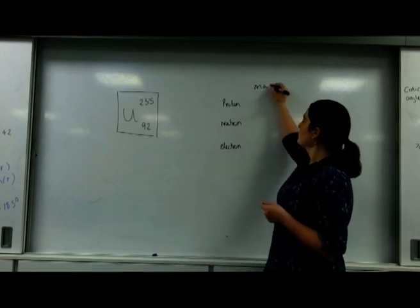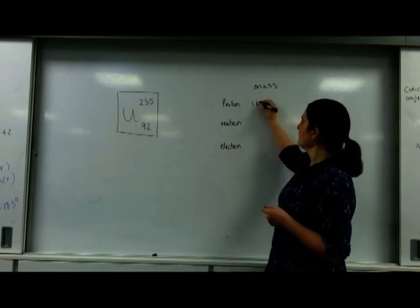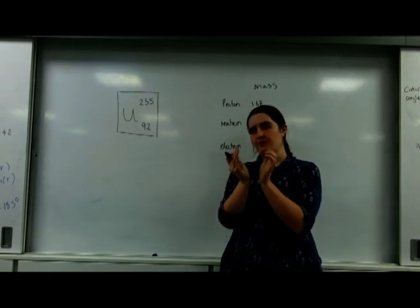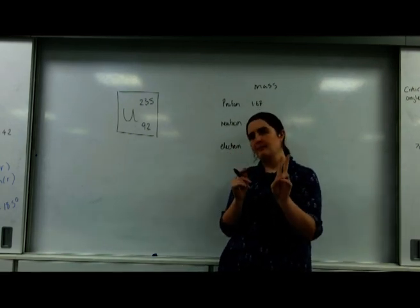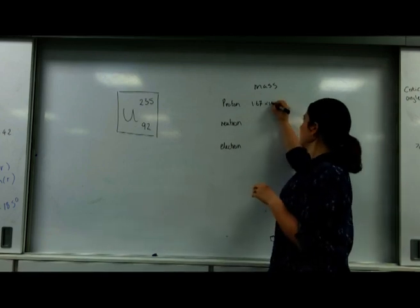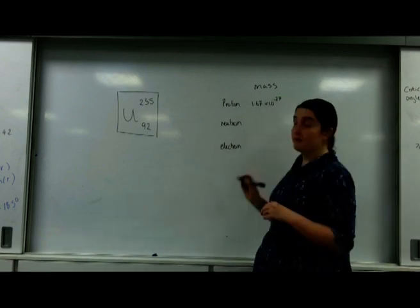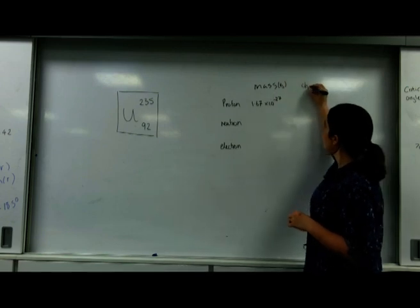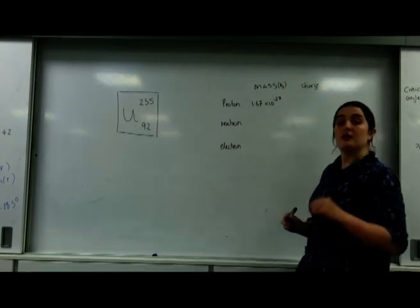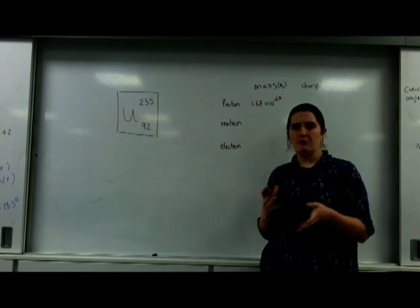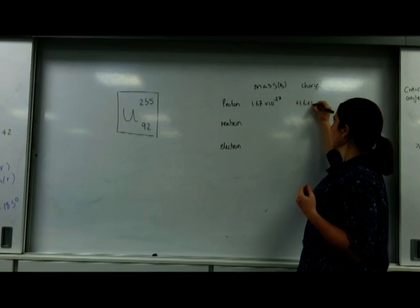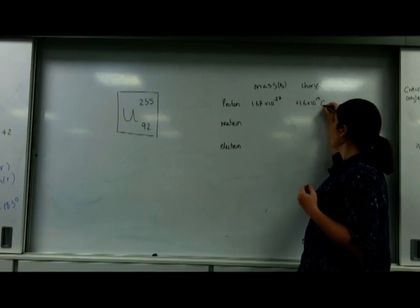The mass of a proton is 1.67—on your datasheet there will be a bracket that says 3, you use that in the second year—times 10 to the minus 27 kilograms. Its charge is the charge of an electron, the same charge but positive. So it's positive 1.6 times 10 to the minus 19 coulombs.